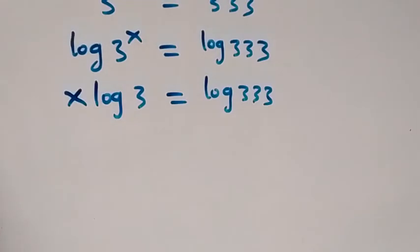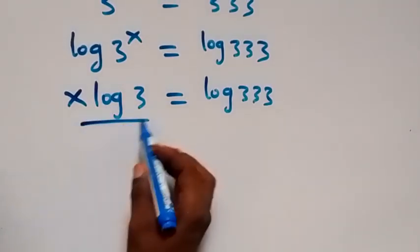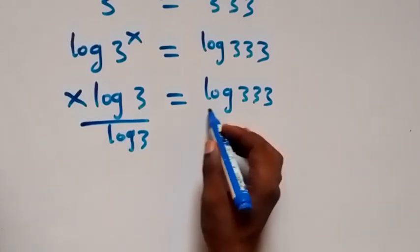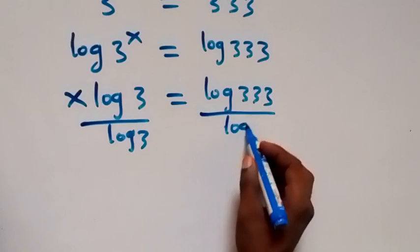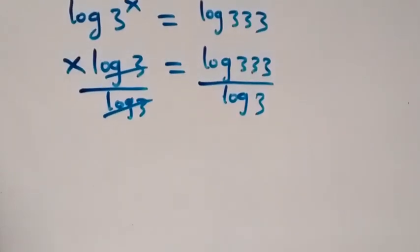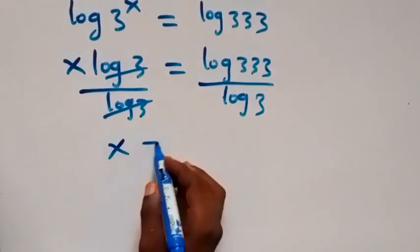Then in the next step, let's divide both sides by log 3. So divide this side by log 3, also divide this side by log 3. Log 3 we cancel out here, then we are left with x which equals to log.